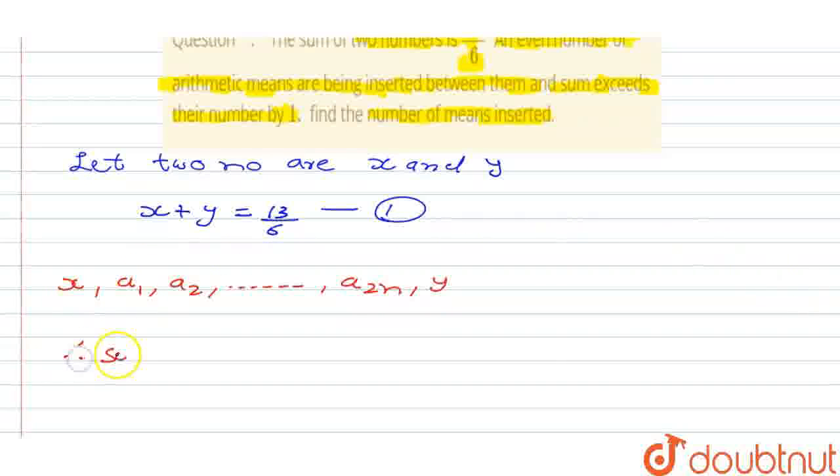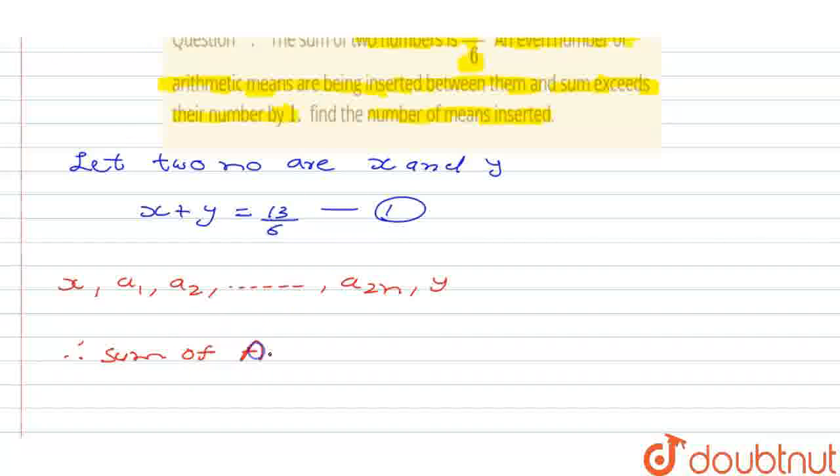Therefore, sum of arithmetic means AM can be written as 2n plus 1 because it is told that it exceeds by 1. Okay, so 2n plus 1.